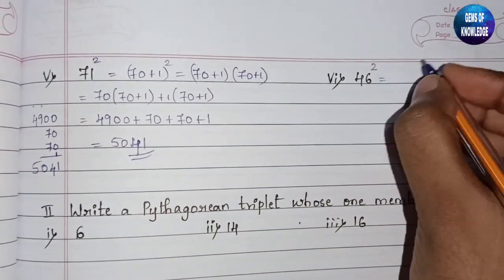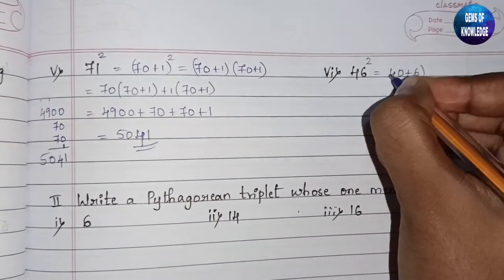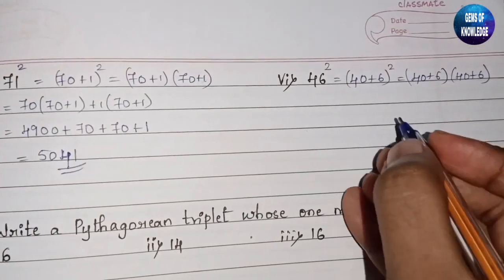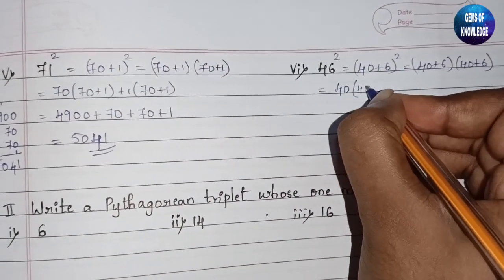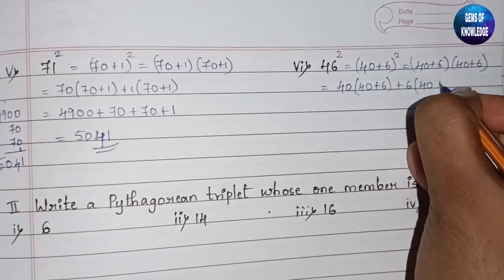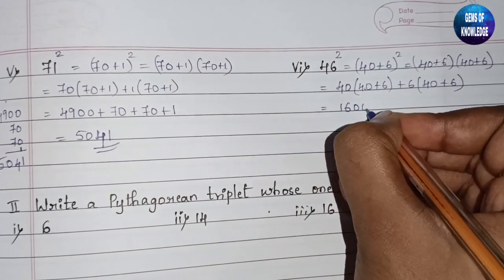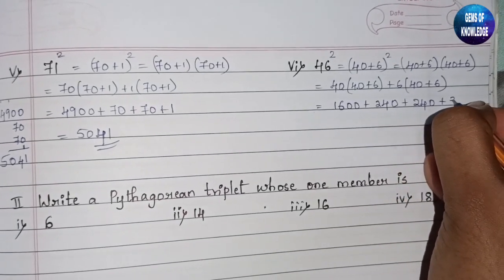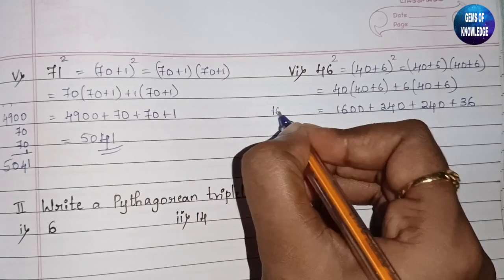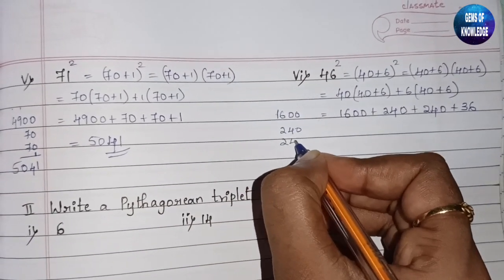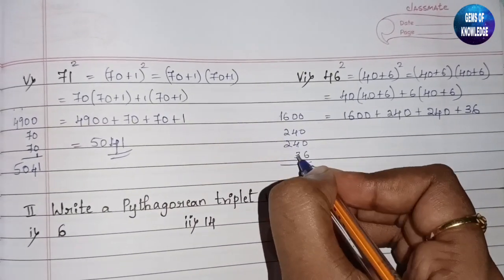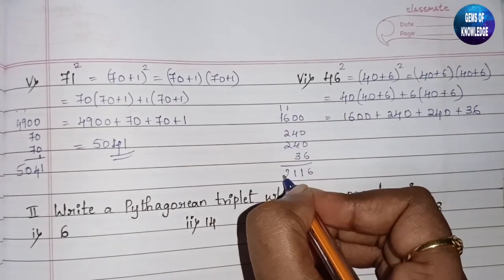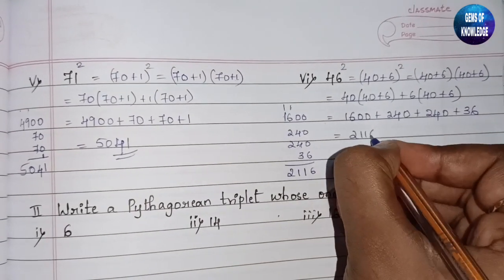The sixth question is 46². We write it as (40+6)², which equals (40+6)(40+6). Expanding: 40×40 = 1600, plus 40×6 = 240, plus 6×40 = 240, plus 6×6 = 36. Adding: 1600 + 240 + 240 + 36 = 2116. So 46² = 2116.